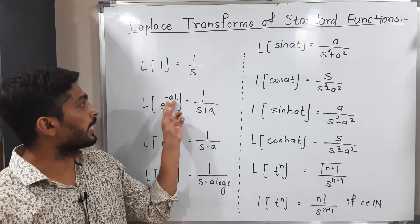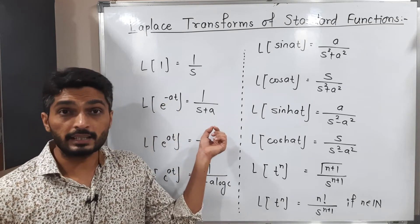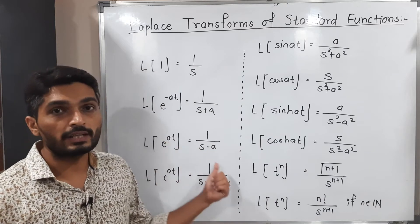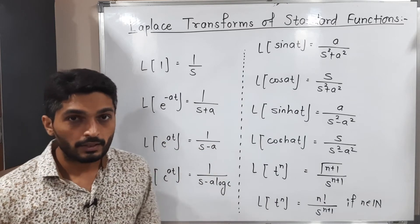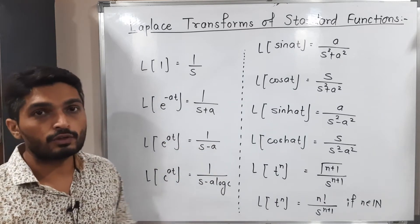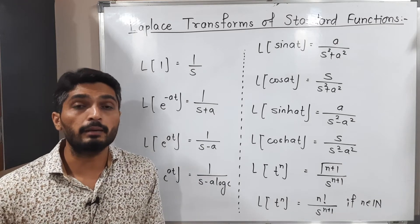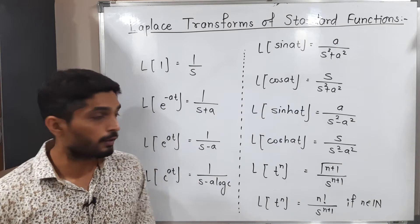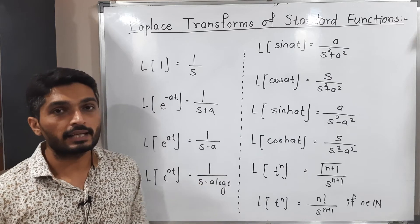That means when the power has a minus sign we take a plus sign there, and when it has a plus sign we take a minus sign there. This is a unique formula: Laplace of c^(at) where c and a both of them are constant. So its formula is 1/(s - a·log(c)).